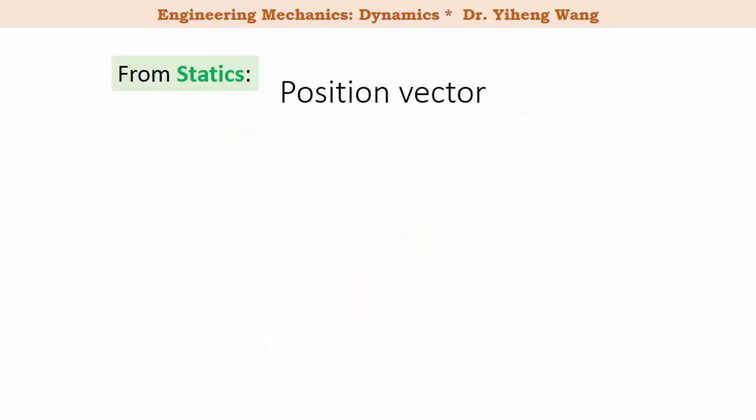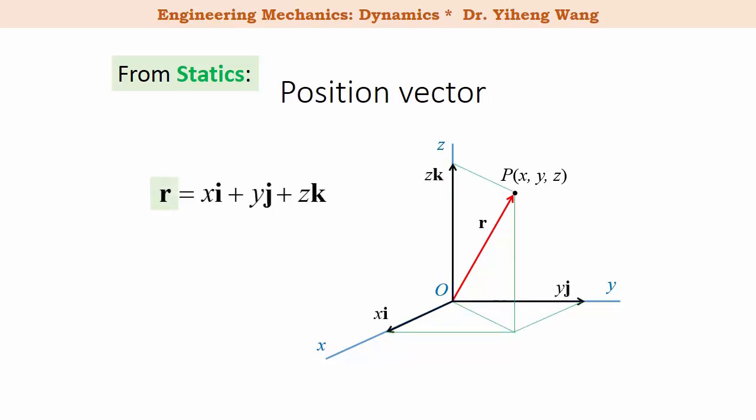If you recall from the statics course, the position of a particle can be represented by the position vector. To do that we need to first establish a reference coordinate system. In this case, a 3D x, y, z rectangular coordinate system. The particle now has coordinates of x, y, z, and the position of the particle is represented by a vector r that is drawn from the origin to this particle. This position vector r is written in Cartesian form as xi plus yj plus zk. Here i, j, k are the unit vectors along the x, y, z axes respectively.